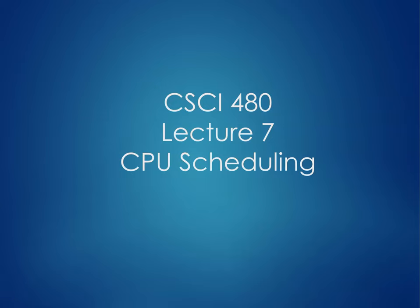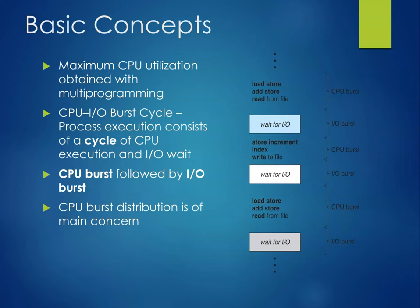In this video, we're going to talk about CPU scheduling. Maximum CPU utilization is obtained by multiprogramming, multiprocessing, multithreading, and all those things. We have CPU and IO burst cycles. Process execution consists of a cycle of CPU execution and an IO wait. The CPU burst is followed by an IO burst often, and the CPU burst distribution is of the main concern.